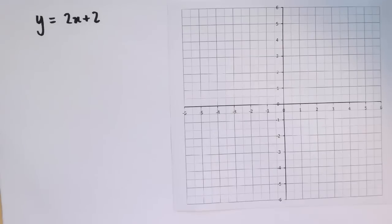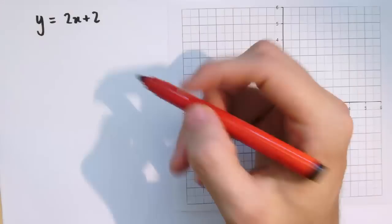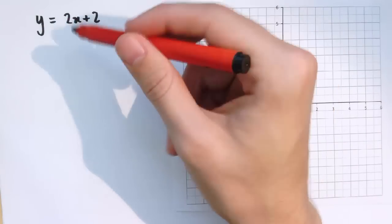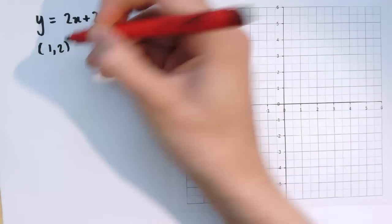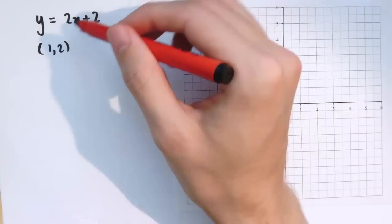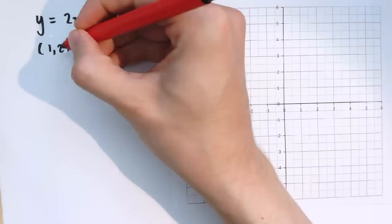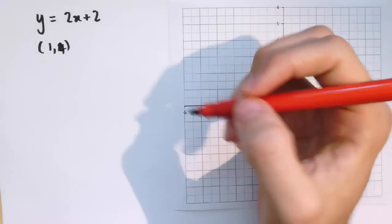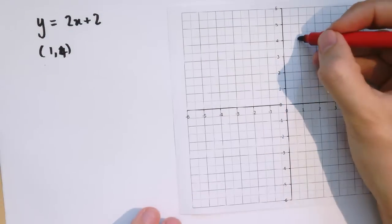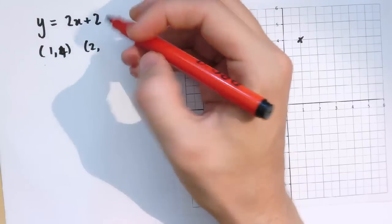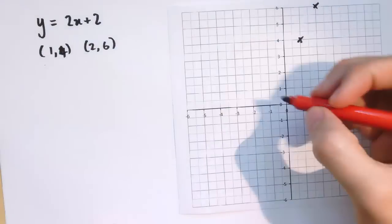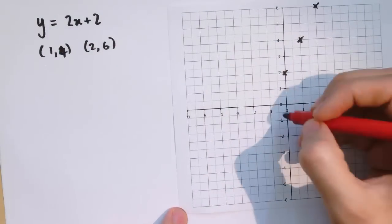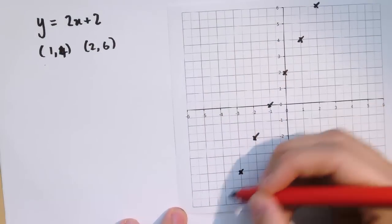What about the graph of y equals 2x plus 2? Anything that works for y equals 2x will work here with y increased by 2. So whereas for y equals 2x we had the point 1, 2, now putting in x equals 1 gives 2 times 1 plus 2 equals 4, so the point is 1, 4. Putting x equals 2 gives y equals 6. Putting x equals 0 gives y equals 2. Those are points on this new graph.